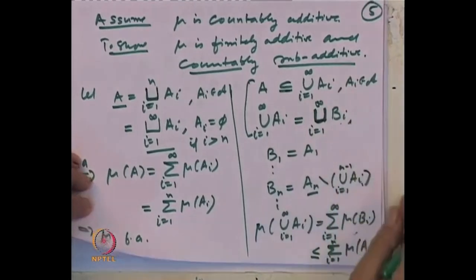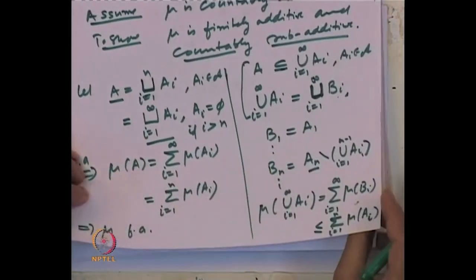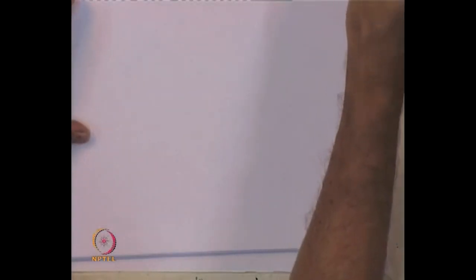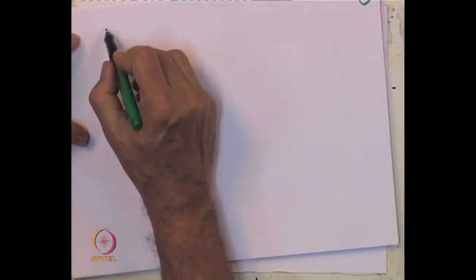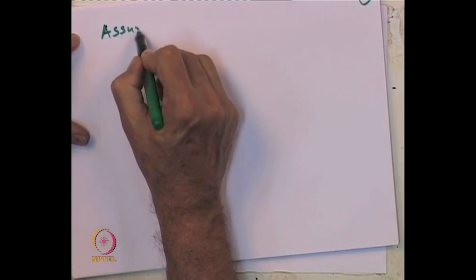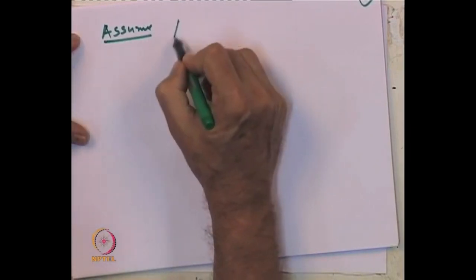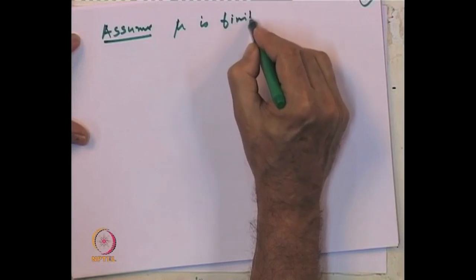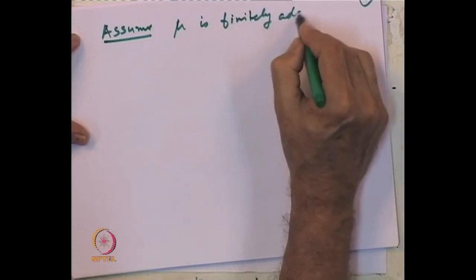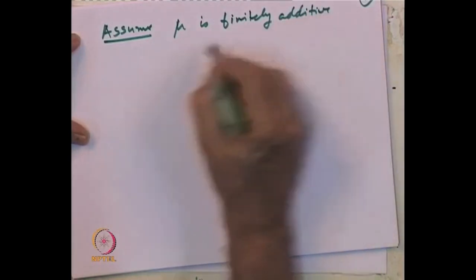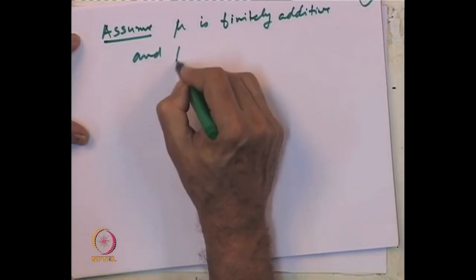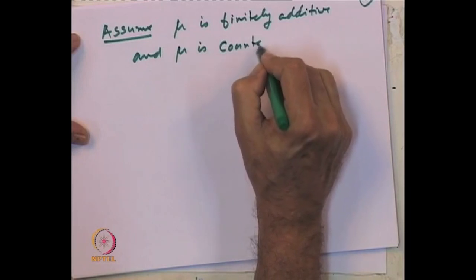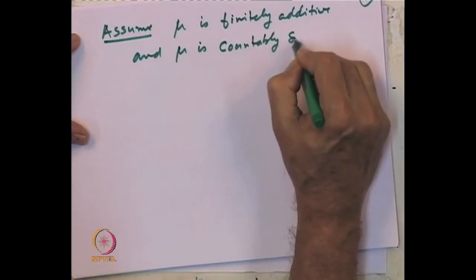Let us prove the other implication: assume mu is finitely additive and mu is countably subadditive, and show mu is countably additive.